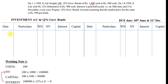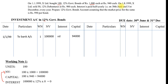Now let us see how we note it down in our account. Date: 1st January 1999. Particulars: To Bank Account. Working Note 1: Nominal Value Rs. 1,00,000, Interest Rs. 0, Capital Rs. 94,000. First do the working note, then do the posting. With that our first entry is done.